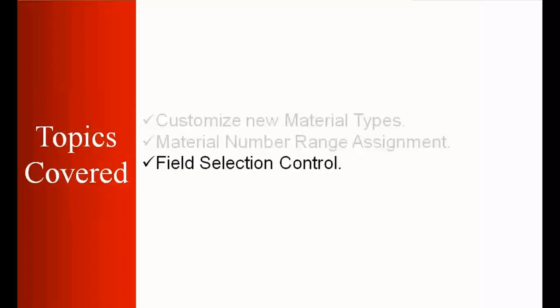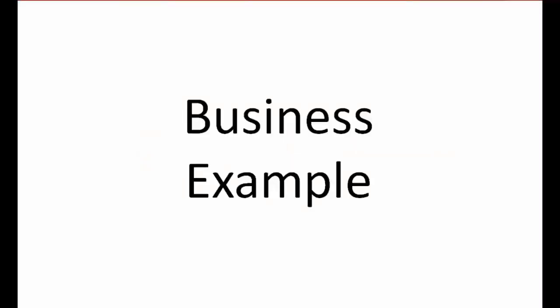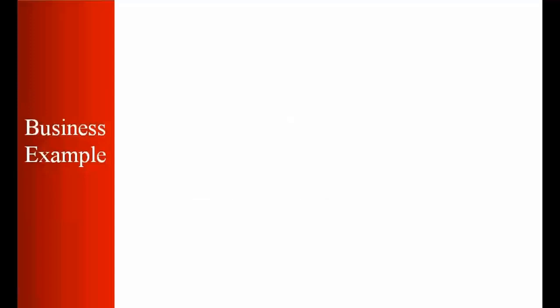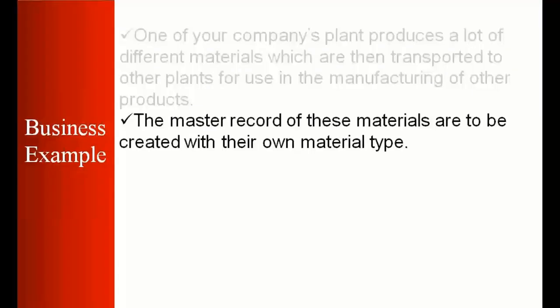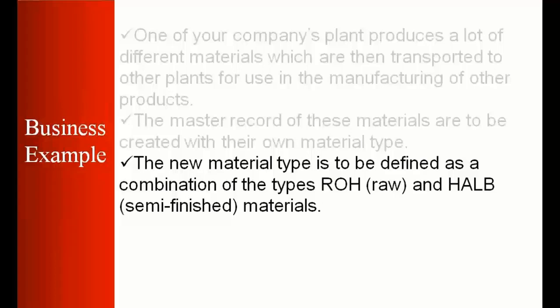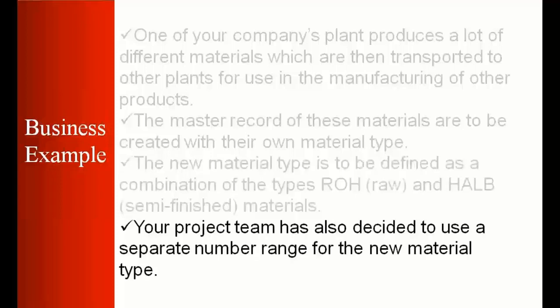First, we'll start with a business example. One of your company's plants produces many different materials which are then transported to other plants for use in the manufacturing of other products. The master records of these materials are to be created with their own material type. The new material type is to be defined as a combination of ROH (raw material) and HALB (semi-finished materials). Your project team has also decided to use a separate number range for the new material type.